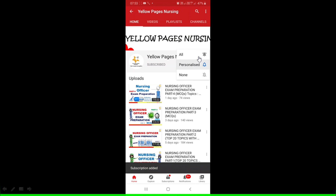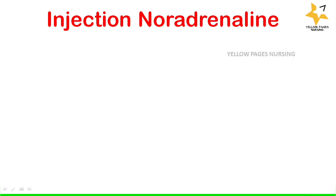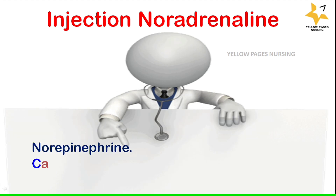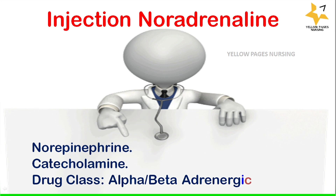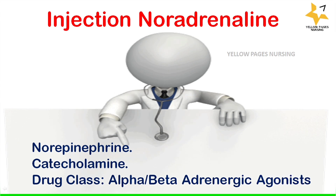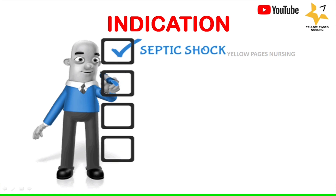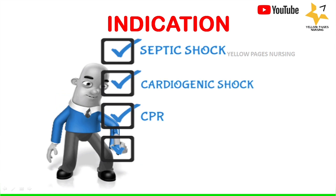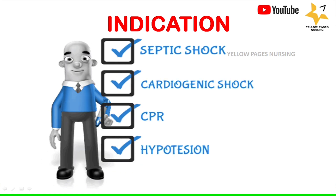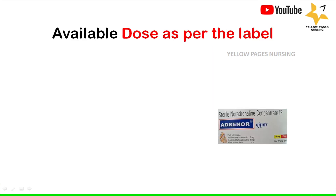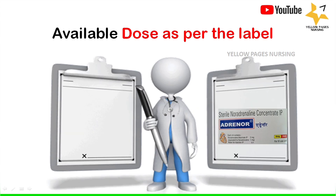Noradrenaline is a catecholamine and it comes under the drug class alpha or beta adrenergic agonists. It is indicated in cases of septic shock, cardiogenic shock, cardiopulmonary resuscitation, and hypotension.